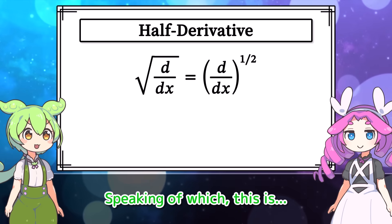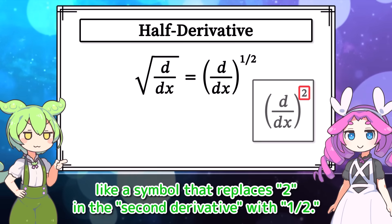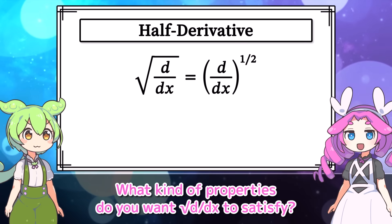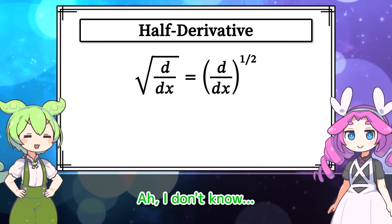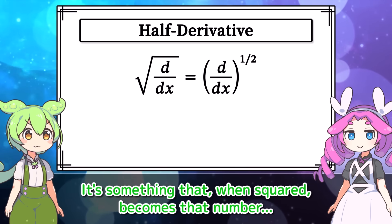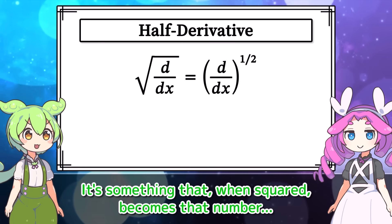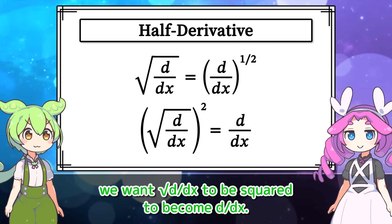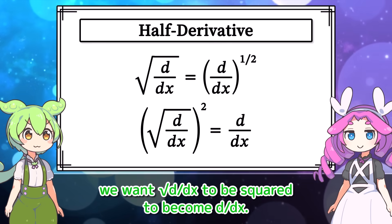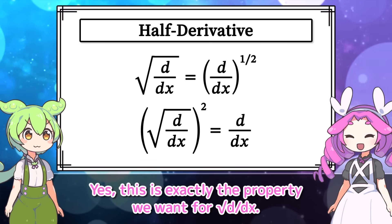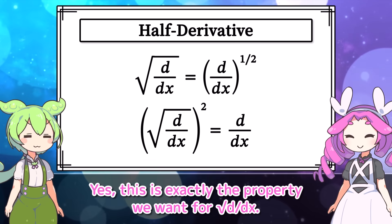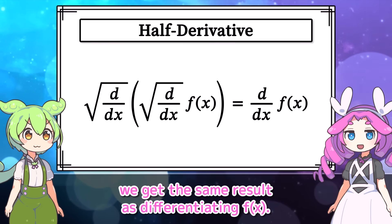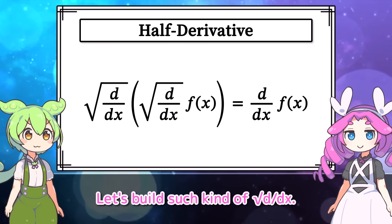This is like a symbol that replaces the two in the second derivative with one-half. What kind of properties do you want the square root of d by dx to satisfy? What does square root mean? It's something that when squared becomes that number. If something called the square root of d by dx exists, we want it squared to become d by dx — this is exactly the property we want. If we apply the square root of d by dx to f(x) twice, we get the same result as differentiating f(x). Let's build such a square root of d by dx.